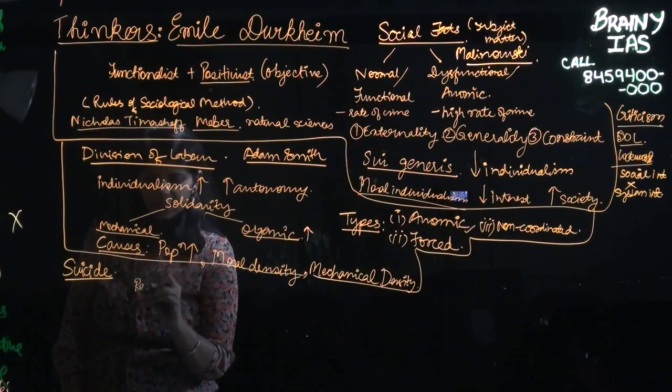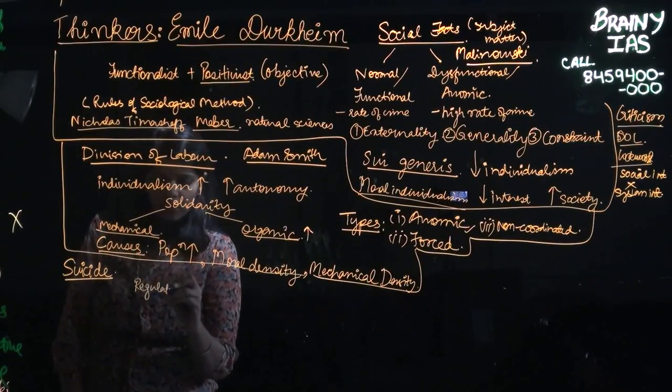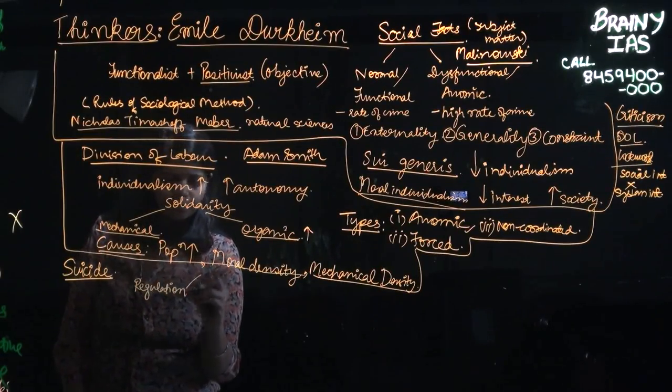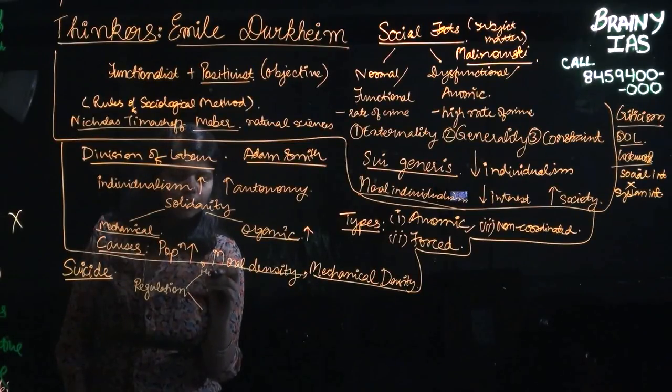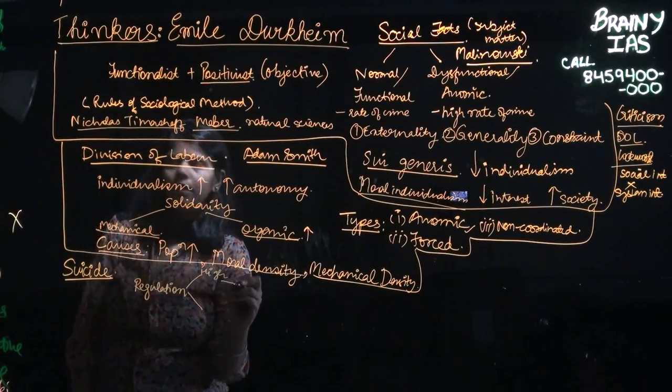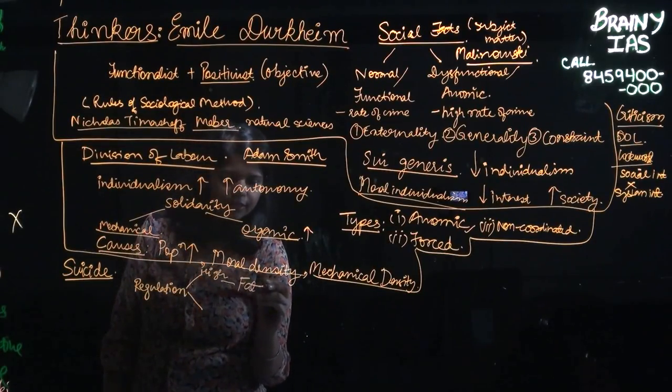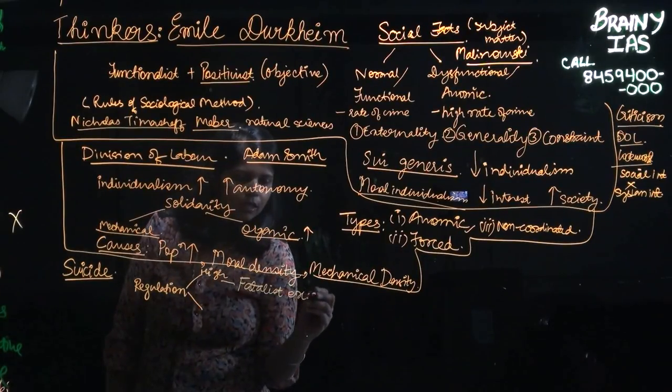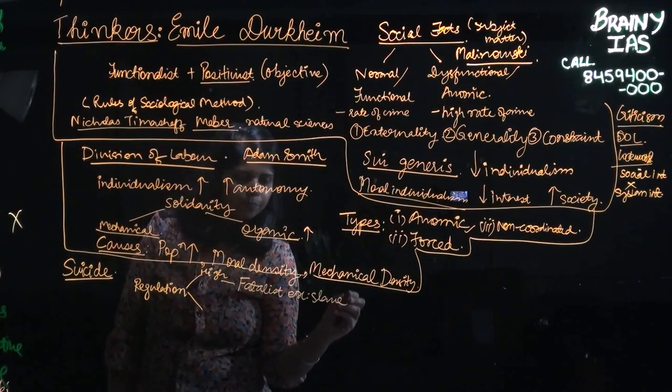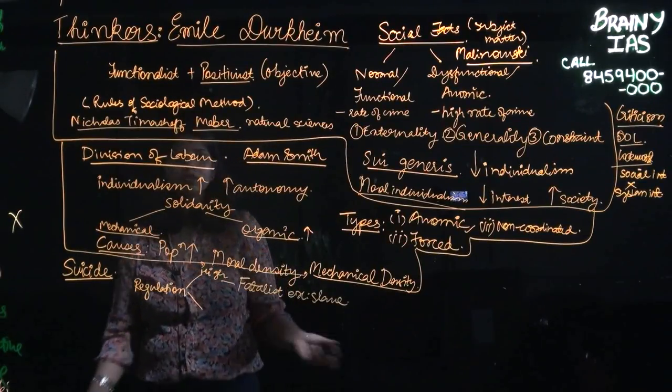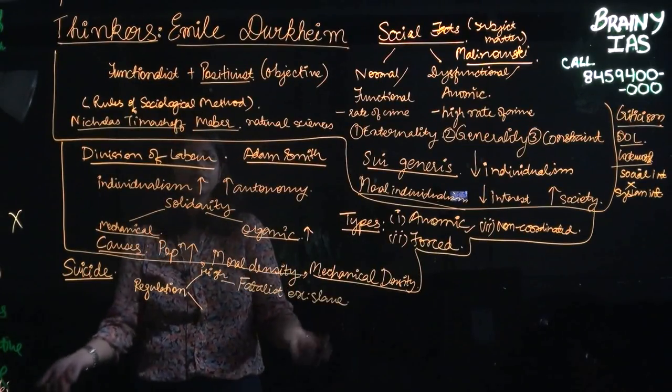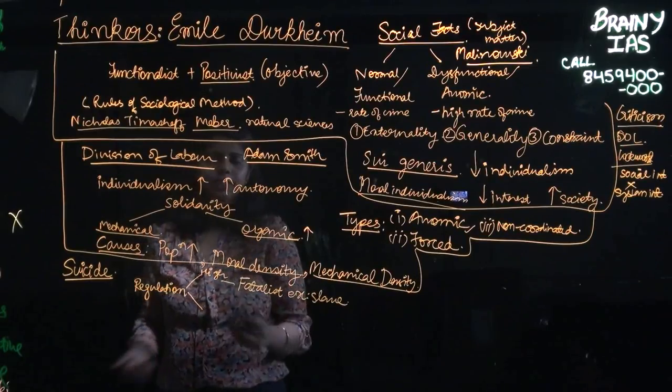Now let's say there is a society which has regulation. Now when the regulation levels are very high, in that case happens a fatalistic suicide. For example, a slave society. They have no way but to commit suicide due to the factors which are highly regulating.